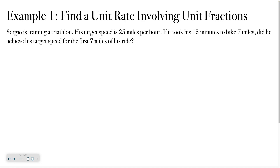Example one: find a unit rate involving unit fractions. Sergio is training for a triathlon. His target speed is 25 miles per hour. If it took him 15 minutes to bike seven miles, did he achieve his target speed for the first seven miles of his ride? So how do we figure this out? We know that he's looking to bike 25 miles per one hour.